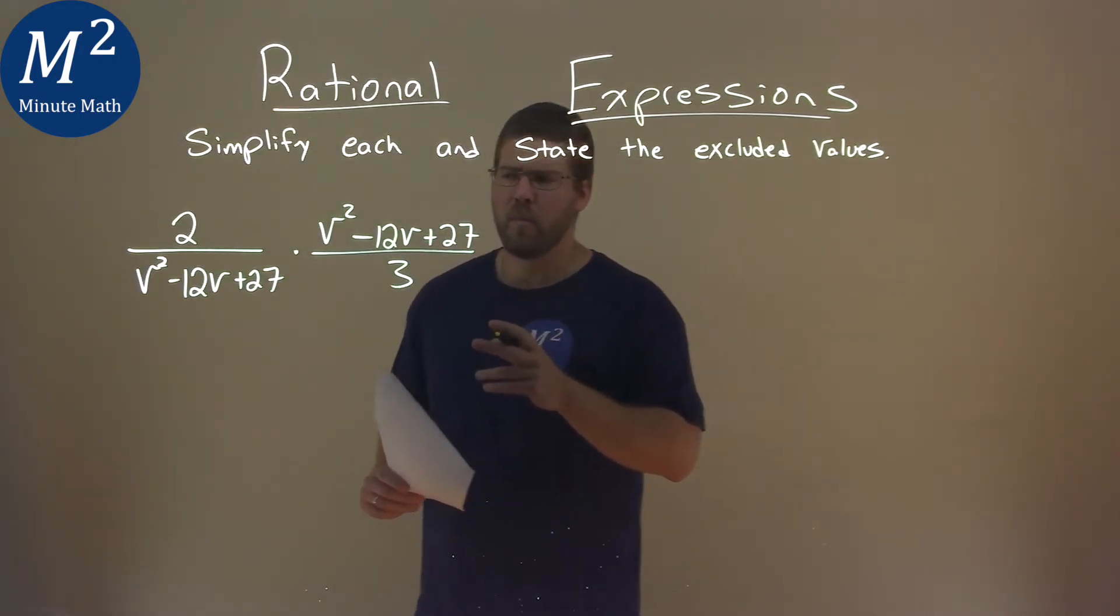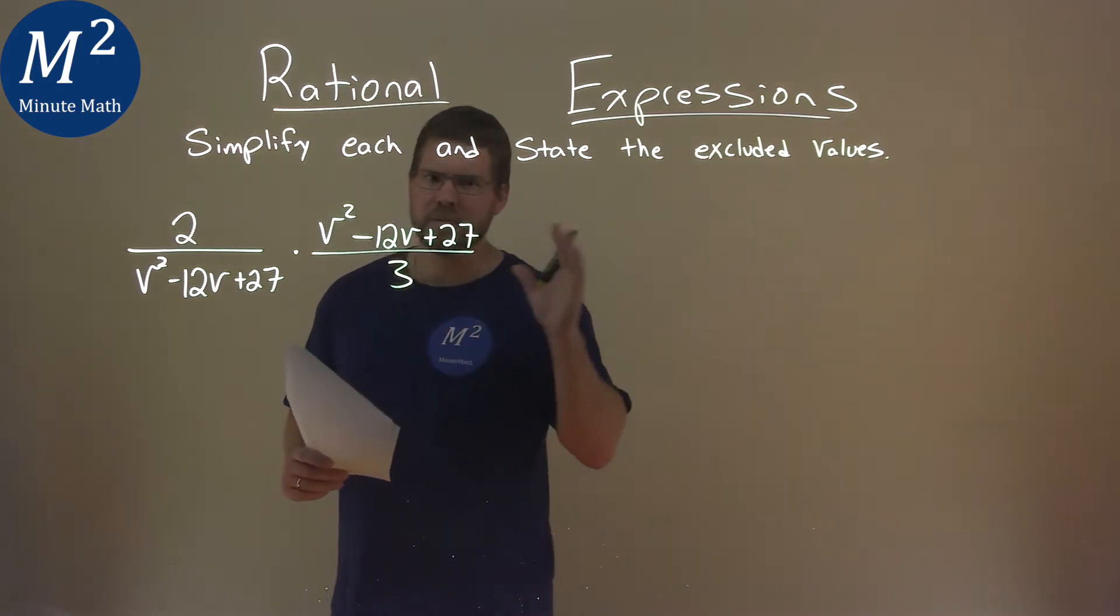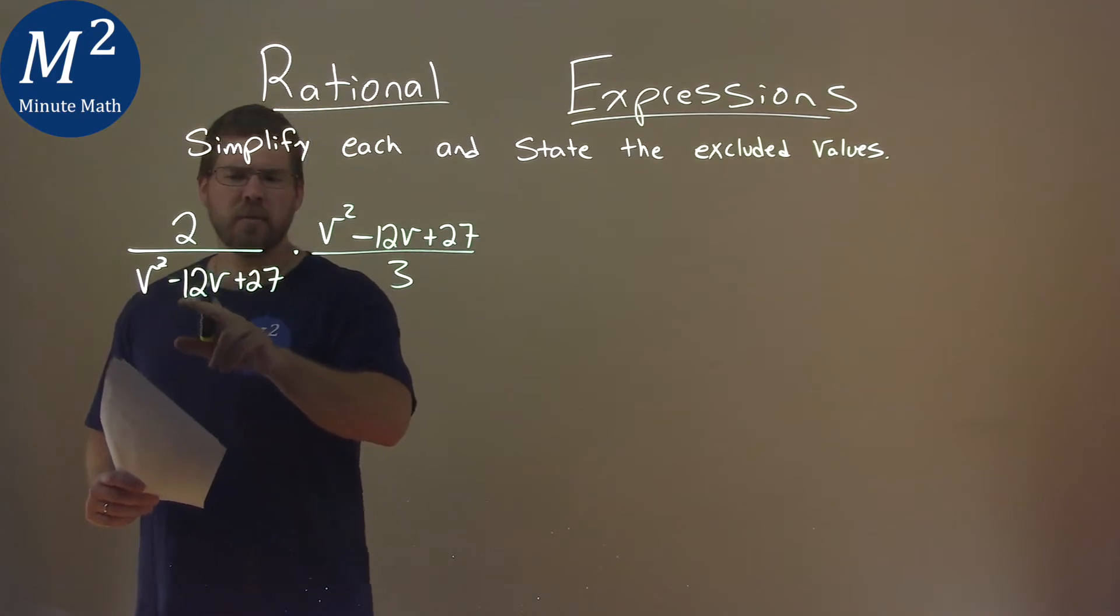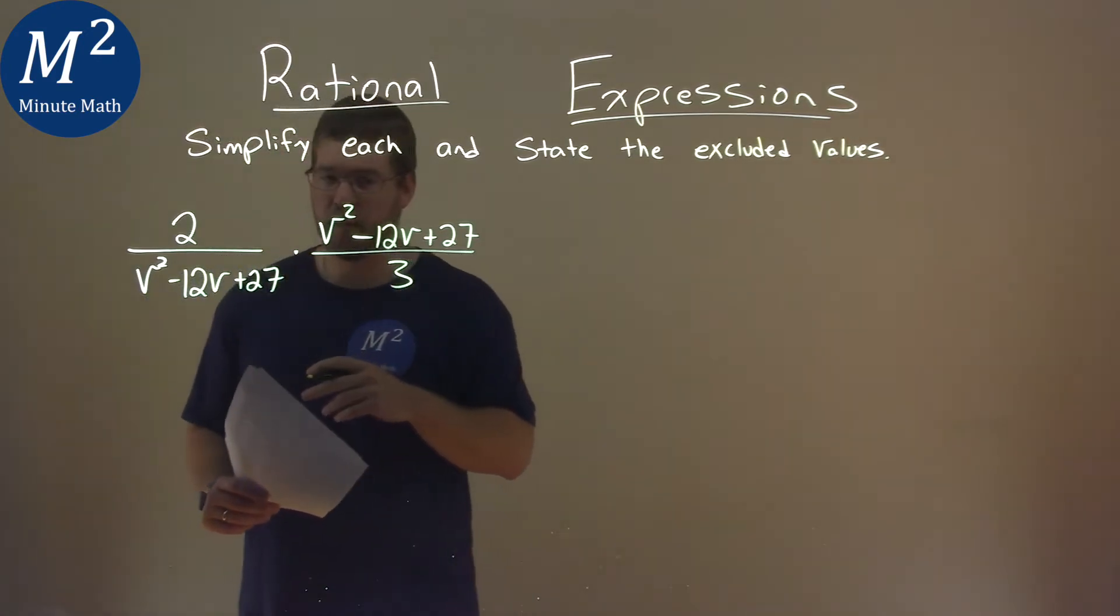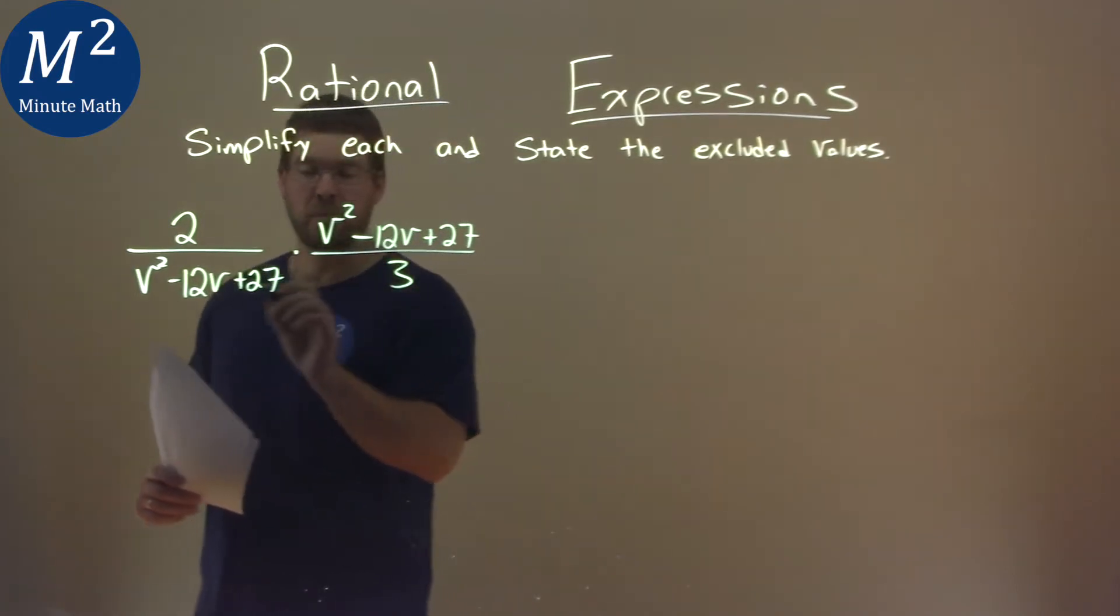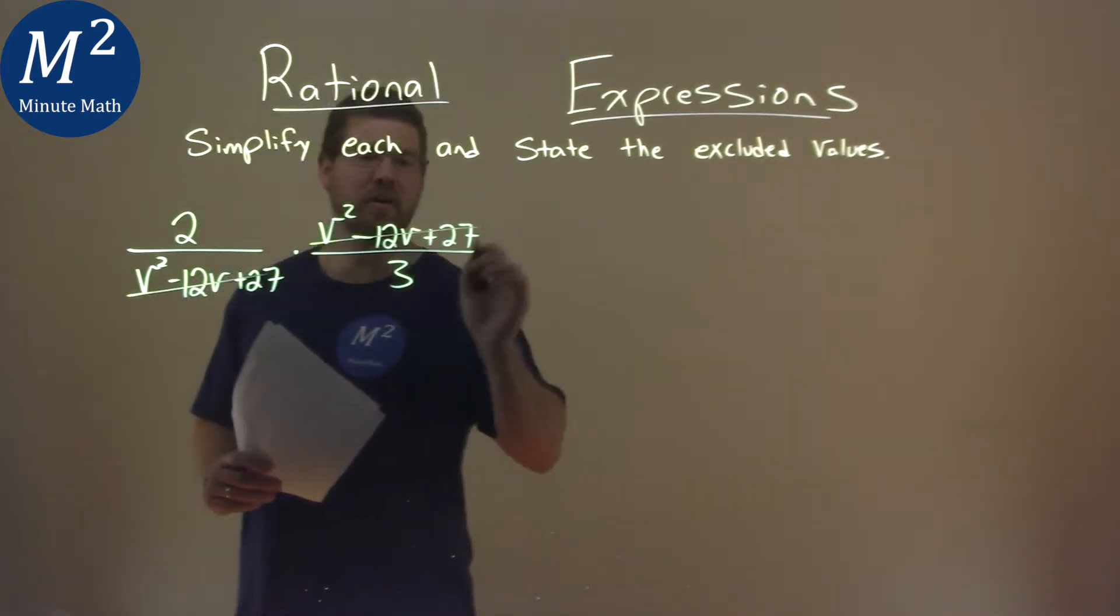Don't get too caught up in this. Let's see if we can simplify this very quickly. I have v squared minus 12v plus 27 in the denominator, and v squared minus 12v plus 27 in the numerator. They can actually cancel each other out.